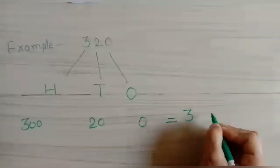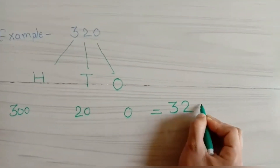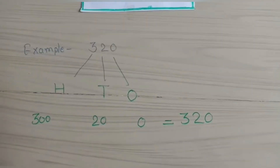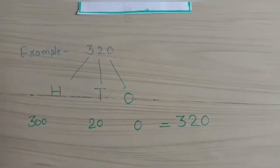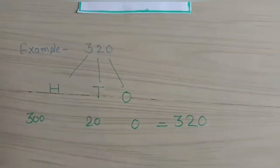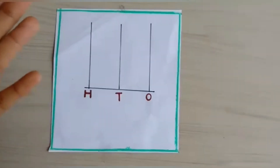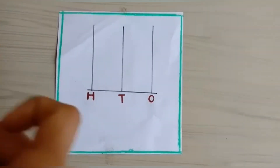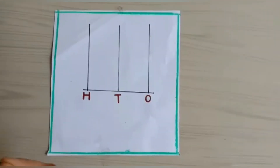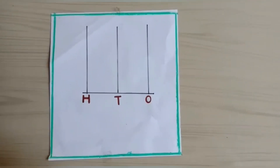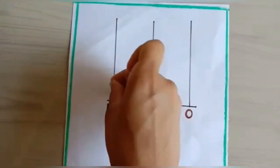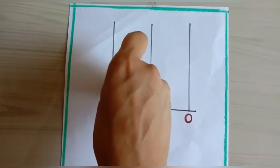So the number is three hundred and twenty. Let's see how we represent this number on an abacus. Here I am using stickers. I don't have big stickers so I am using small stickers.